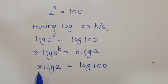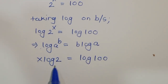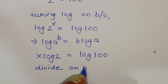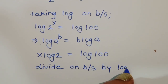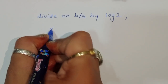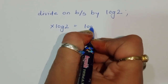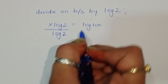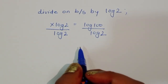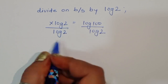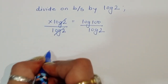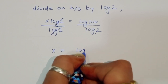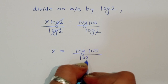To find x, we need to cancel log 2, so we divide both sides by log of 2. Then x times log of 2 divided by log of 2 — the log 2 terms cancel — giving us x equal to log of 100 divided by log of 2.